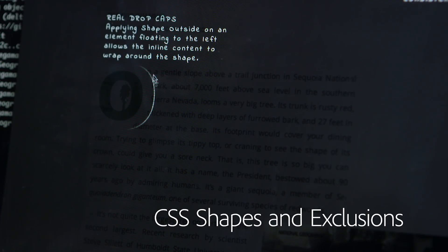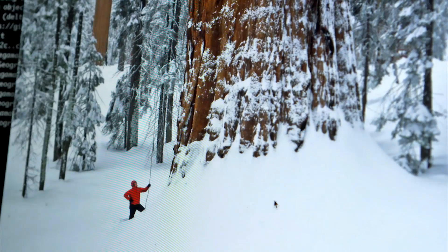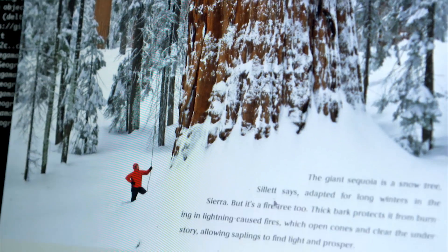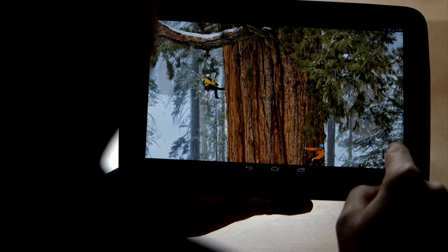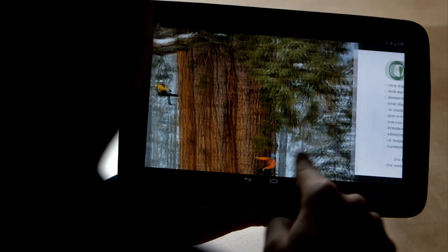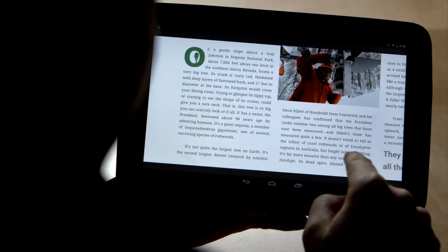Exclusions lets us wrap text around objects. It lets you do drop caps and wrap text around mountains or valleys or trees or things like that, so that we can place the text in the best place on the page according to the story you're trying to tell.